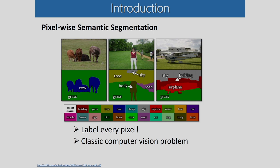Semantic segmentation is the pixel-wise labeling of every pixel of the image. If you see the input image, corresponding to it we have done the labeling. You can see labels such as cow and grass — these pixels are labeled. That is the definition of semantic segmentation. Similarly for a second image you can see labels like tree, sky, body, road, and grass.